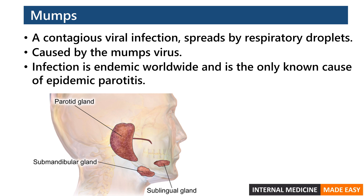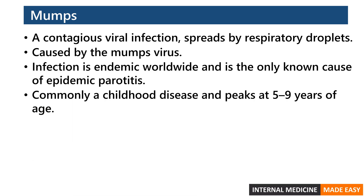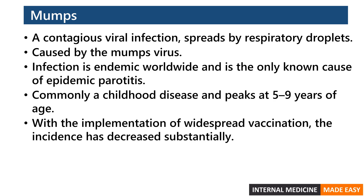Mumps is the only known cause of epidemic parotitis. Parotitis is inflammation of the parotid gland, which is the largest of the three major salivary glands. It is commonly a childhood disease and peaks at five to nine years of age. Mumps can be prevented with the MMR vaccine, and with widespread vaccination, the incidence of mumps has decreased substantially.